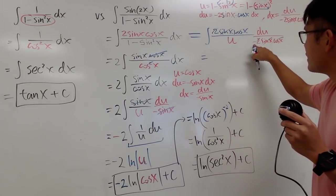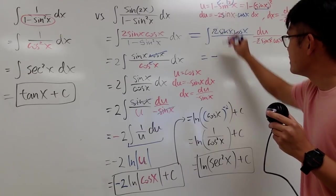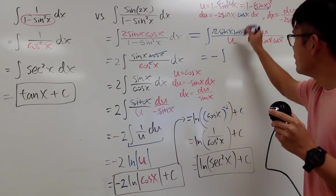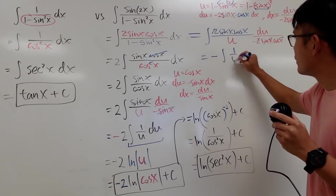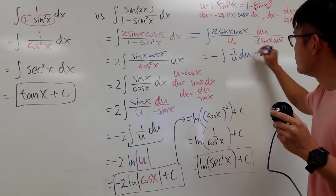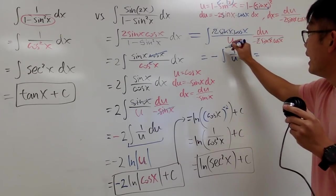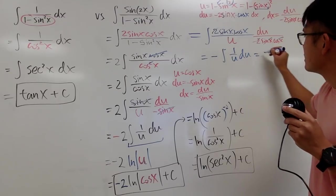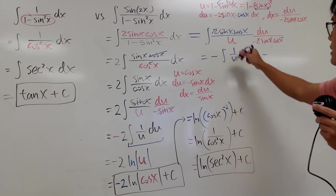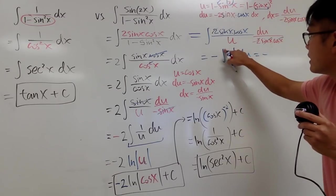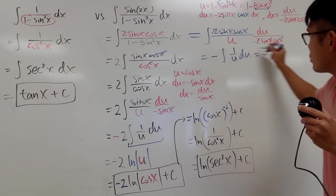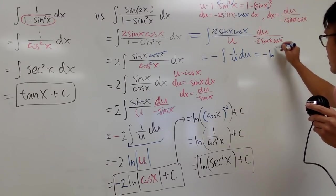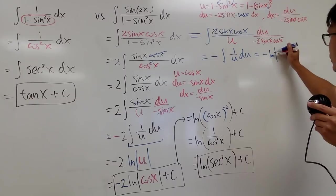We have a negative, though — bring that to the front. And this is the integral of 1 over u, du. And this right here gives us natural log of the absolute value of u.